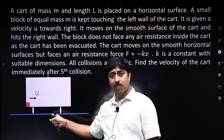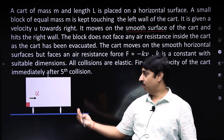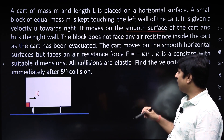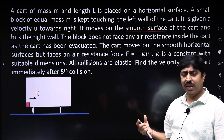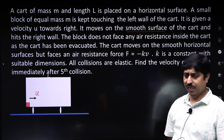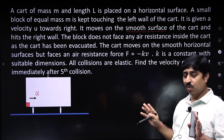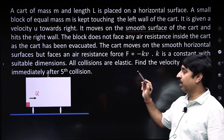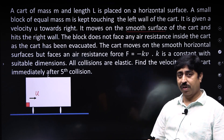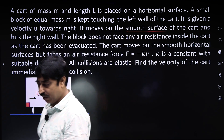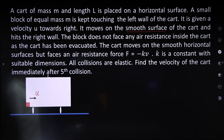When the cart moves on this smooth horizontal surface, it faces an air resistance force which is proportional to the speed of the cart. So, force is minus kV — this minus sign indicates that force is always opposite to velocity. K is a constant with suitable dimensions. All collisions are elastic. Find the velocity of the cart immediately after the fifth collision. You can capture the question and give it a try on your own before looking at my solution.